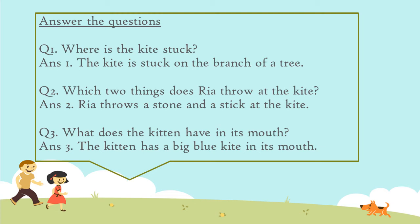Now let's discuss the question and answers. Question 1: Where is the kite stuck? The kite is stuck on the branch of a tree.